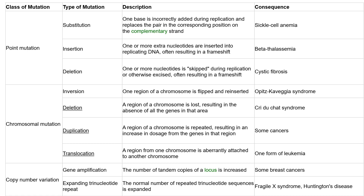Then you have inversion, where one region of the chromosome is flipped and reinserted, which could result in a disease called Opitz-Kavadia syndrome. You also have deletion of a chromosome region, resulting in the absence of all genes in that area, which could result in Cri-du-chat syndrome.